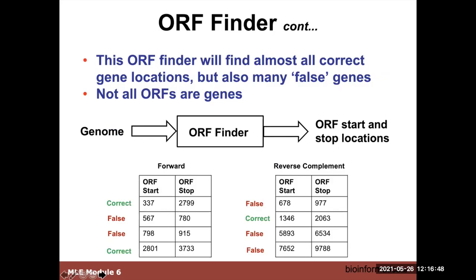By finding all the starts and stops, we can identify possible genes from the forward strand and the reverse complement. In an E. coli example, we found a gene from position 337 to 2799 — that's a real gene. A nested gene from 567 to 780 is not real, nor is one from 798 to 915. Another from 2801 to 3733 is real. Looking at the reverse strand similarly, you can see where genes were identified — some overlapped, some were long, some short. On average, at the gene level, we're finding a lot of false positives.